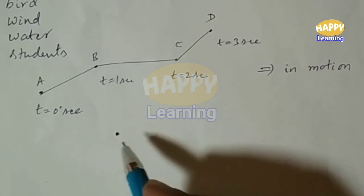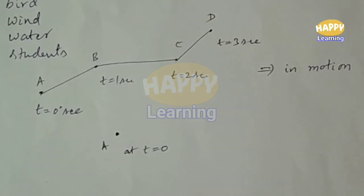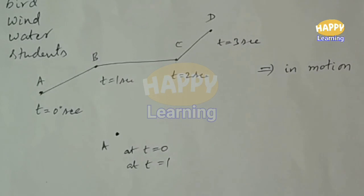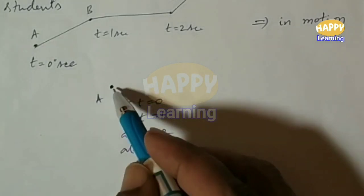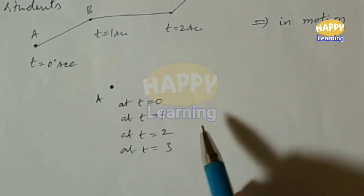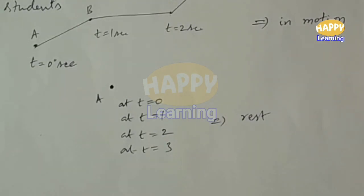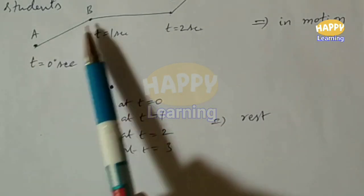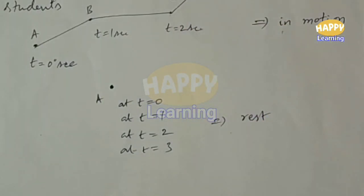There is another person at point A, at t equal to zero. After one second, at t equal to one, again he is found to be at A only. At t equal to two seconds, t equal to three seconds — like that, time is passing but the person is still found to be at A. Then he is said to be at rest. This person is not changing its position. If it is changing, it is in motion; if it is not changing, it is at rest.